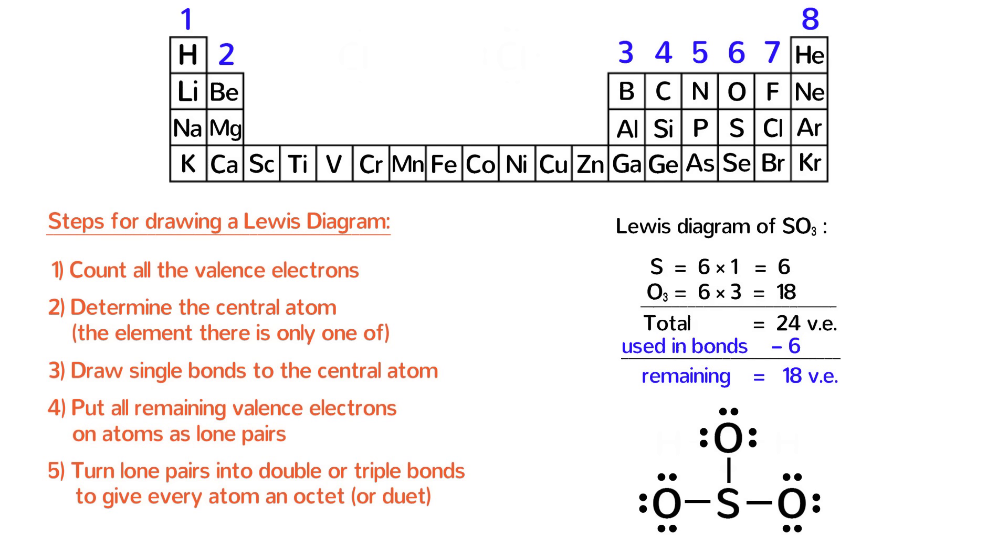Step 5. First, pause the video and check to see if any atom does not have an octet or duet. That's right, the sulfur is unhappy because it only has 6 valence electrons. So what can we do to make it happy? We cannot just give it more electrons since we don't have any more. Instead, one of the oxygen atoms can take one of its lone pairs and share those two electrons with sulfur in another bond. The double bond between oxygen and sulfur now makes every atom happy with 8 valence electrons.